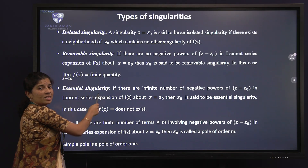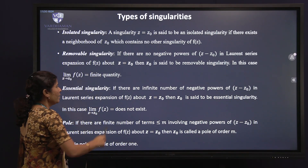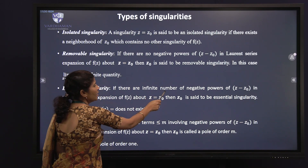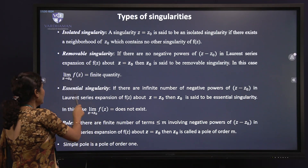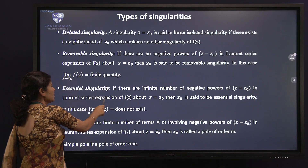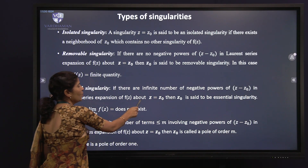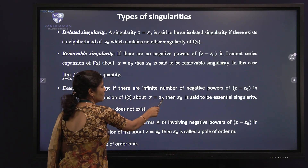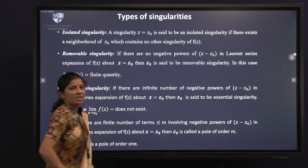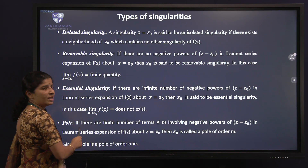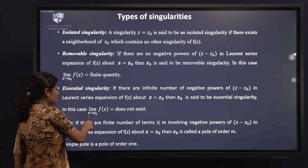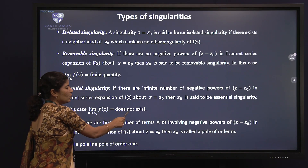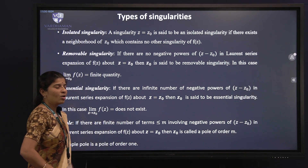Next, the essential singularity: if there are an infinite number of negative powers of (z - z₀) in the Laurent series expansion of f(z) about z = z₀, then z₀ is said to be an essential singularity. In this case, the limit as z tends to z₀ of f(z) does not exist.